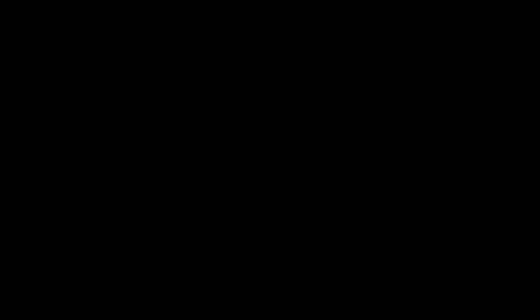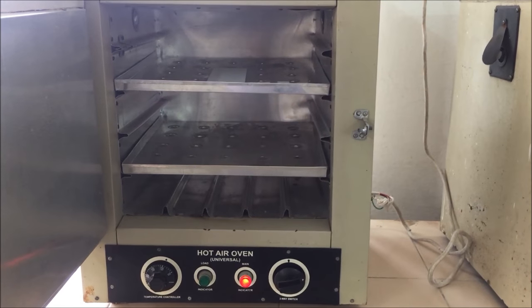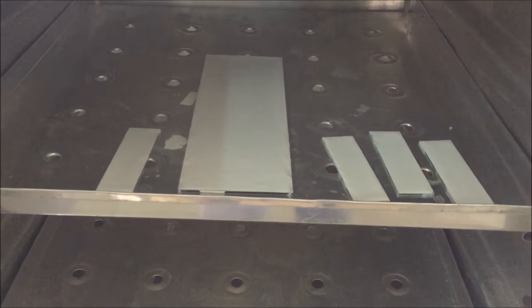After drying the plate at room temperature, then finally place the dried plate in a hot air oven for about 1 hour at 100 to 105 degrees Celsius to activate them.